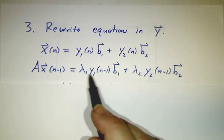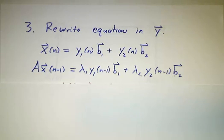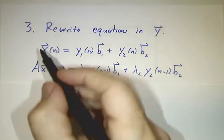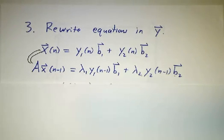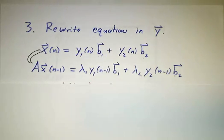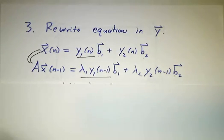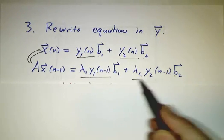But A times b1 is lambda 1 b1. And A times b2 is lambda 2 b2. So, these two things have to be equal. And how can two linear combinations be equal? Since these are linearly independent, this must equal this. And this must equal this.